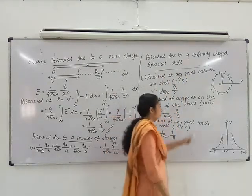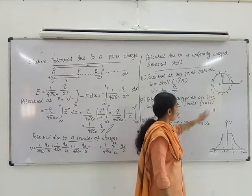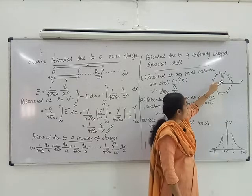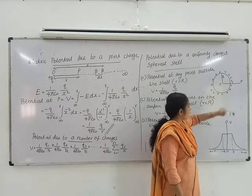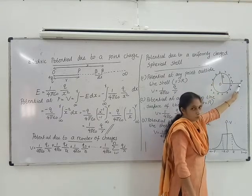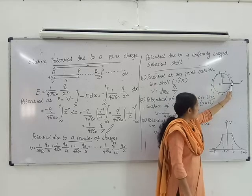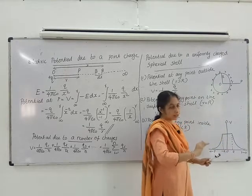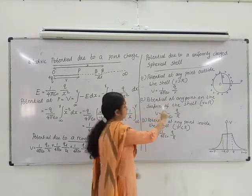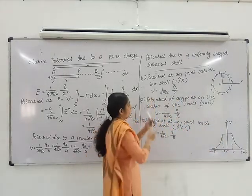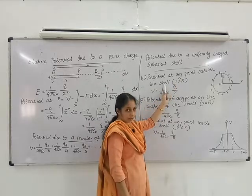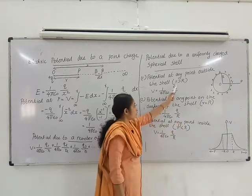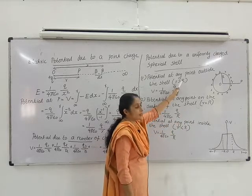Now consider a uniformly charged spherical shell of radius capital R. Let P be a point at a distance r from the center of the shell. We have three cases. First case: potential at any point outside the shell, where small r is greater than capital R.